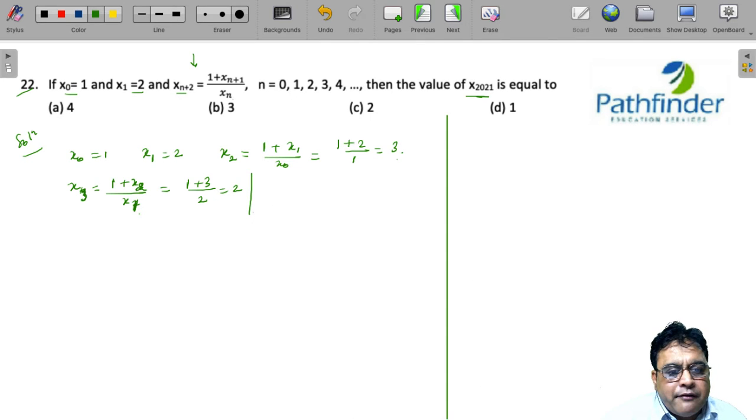Next, we have x₄ which is 1 plus x₃ upon x₂. x₃ is 2, so 1 plus 2, 3 upon 3, that is 1.